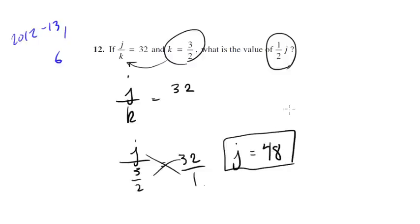So we know j is 48, but remember we want 1 half j, so 1 half of 48 should give us 24, which is the answer to this question.